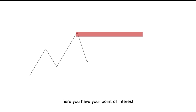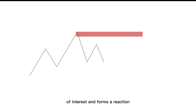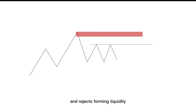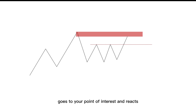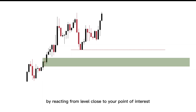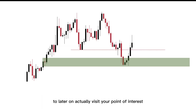Let's talk about inducement. What is inducement? Here you have your point of interest. Price approaches your level but doesn't get all the way to your point of interest and forms a reaction. What is price trying to do? It's trying to entice you into taking a position — trying to force you into abandoning your point of interest as if price is not going to reach that level. Price comes back, reacts from that same level, and rejects, forming and engineering liquidity. They're trying to entice you into taking a short before price actually takes the liquidity, goes to your point of interest, and reacts.